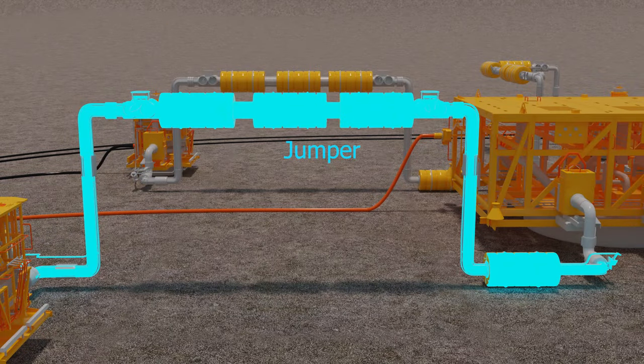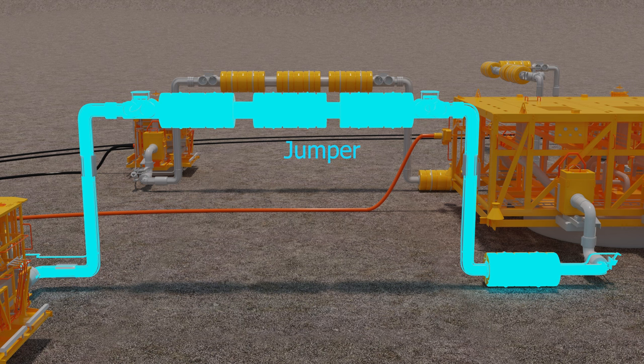A jumper. It connects and transmits oil from the subsea tree to a production manifold.